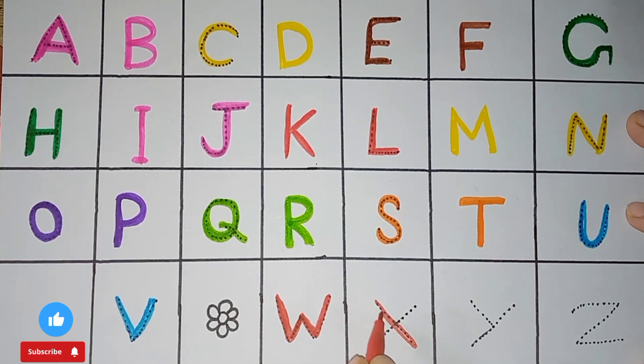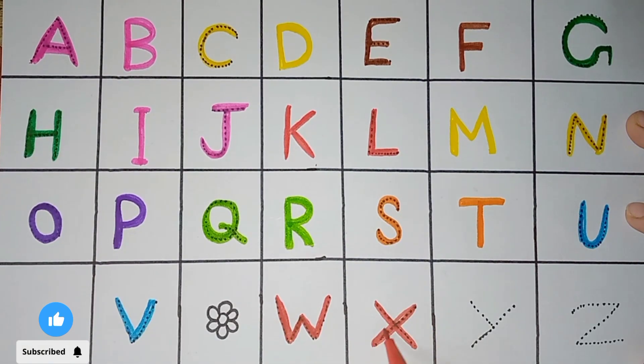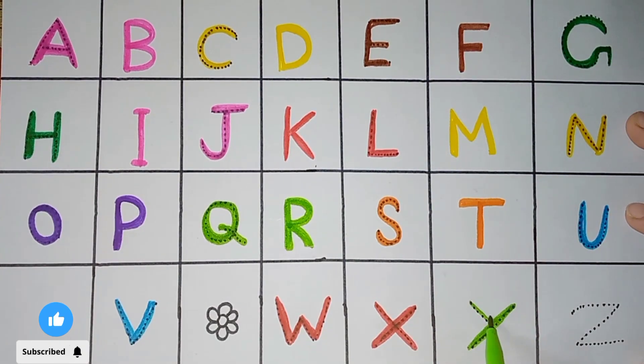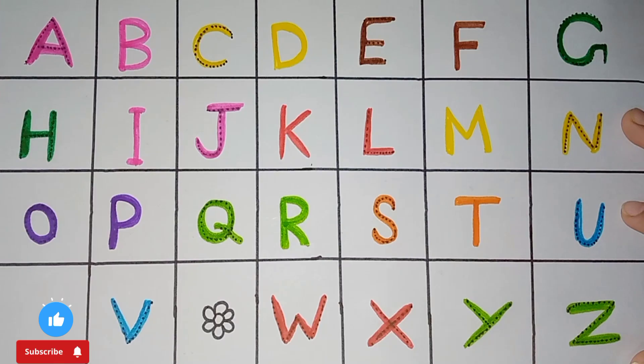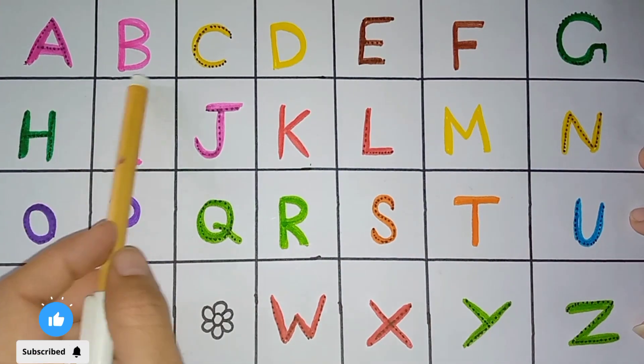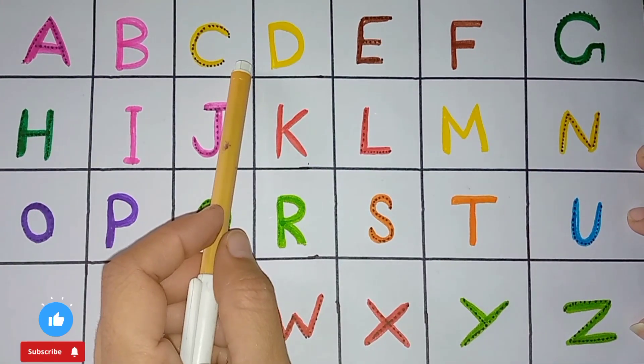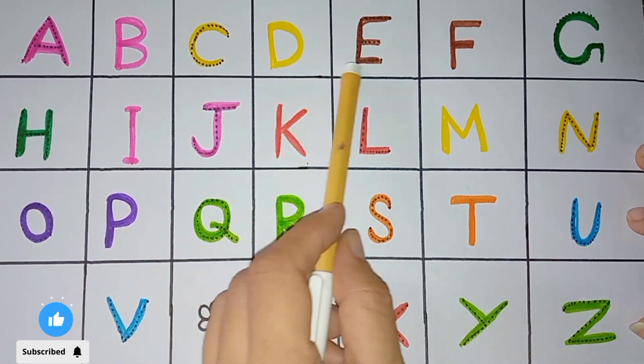W. W for watch. X. X for x-rays. Y. Y for yuck. Z. Z for zoo. Let's start kids, repeat our lesson.